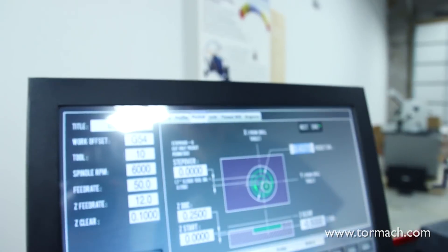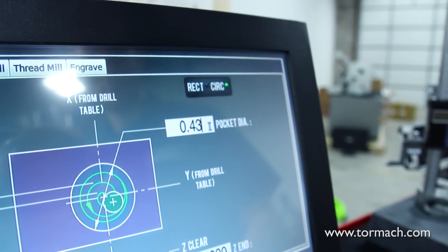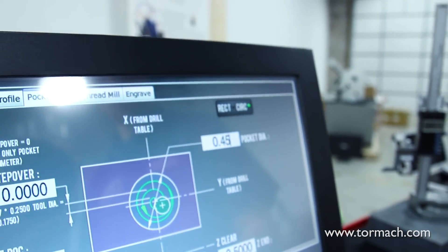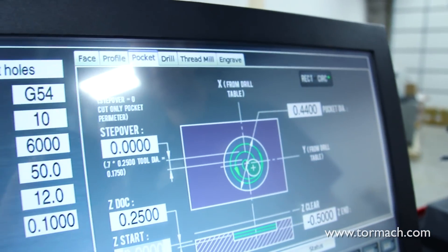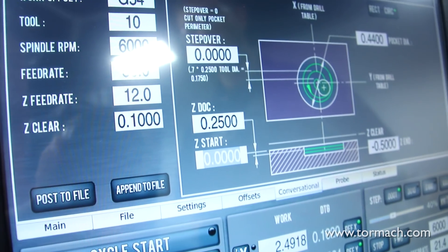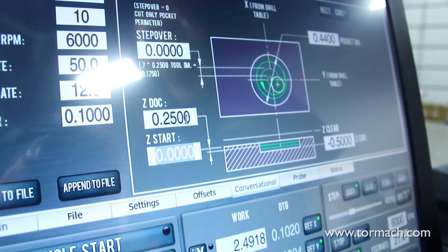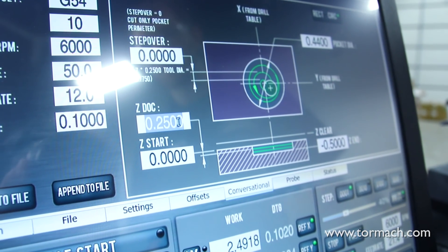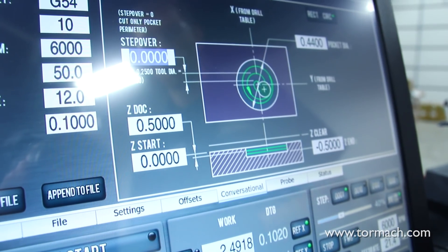We'll set our step over at zero. We'll increase our pocket diameter to 440 thousandths, taking a real light finish pass on there. We're still using the hole positions from the drill table, so it'll recut those two holes we just created. Instead of doing two passes at a quarter inch, I'm going to tell it our depth of cut is a half inch. We're going to take just a real light finish pass at full depth.